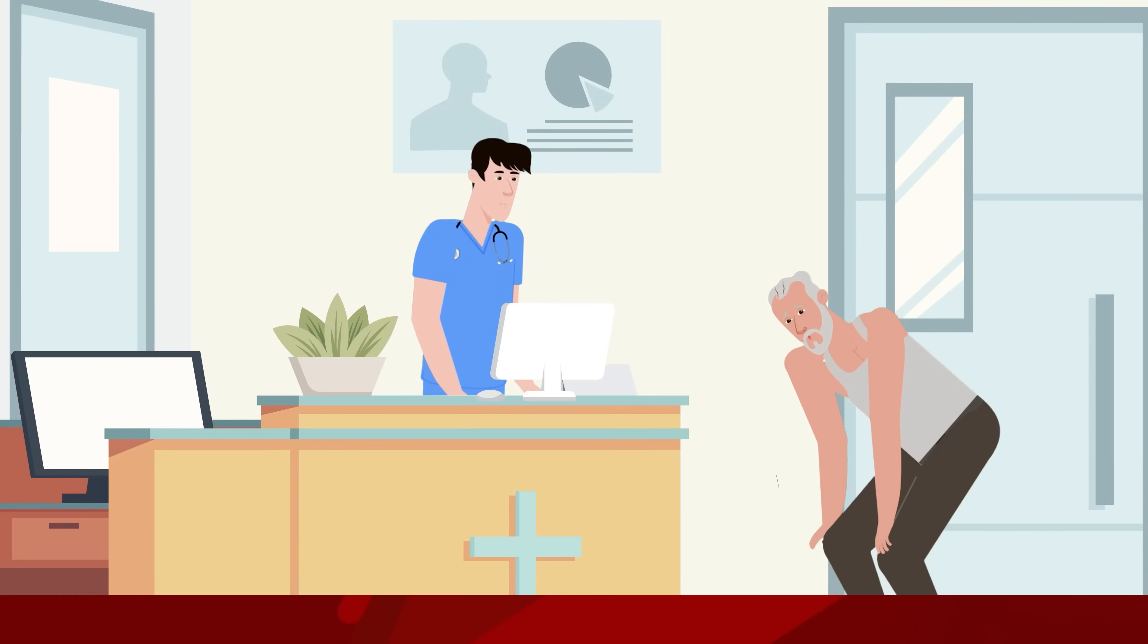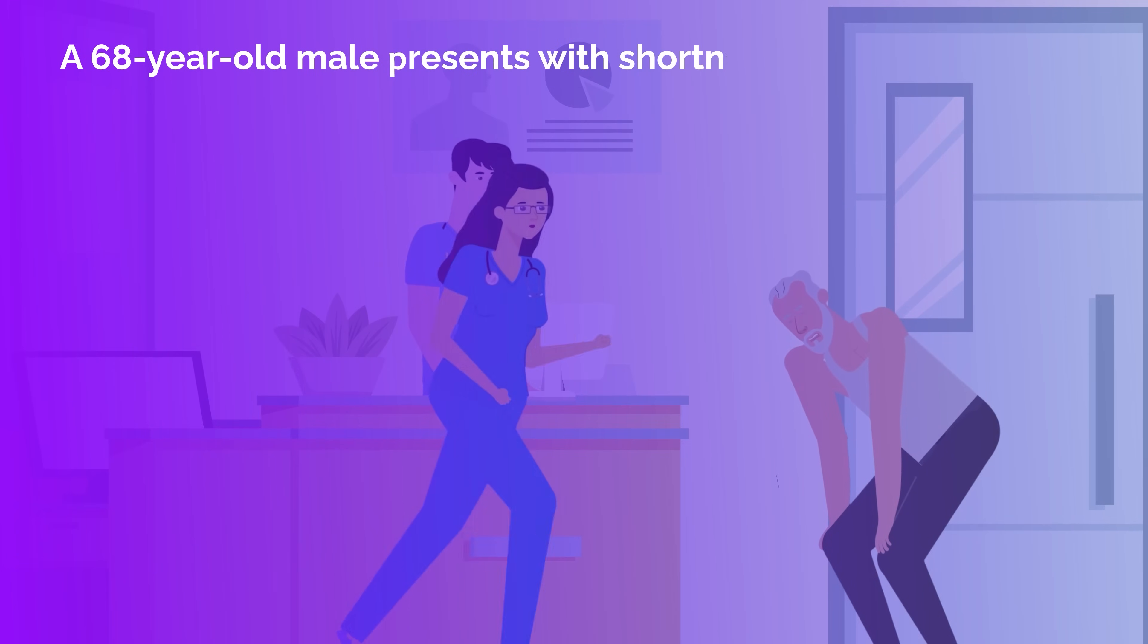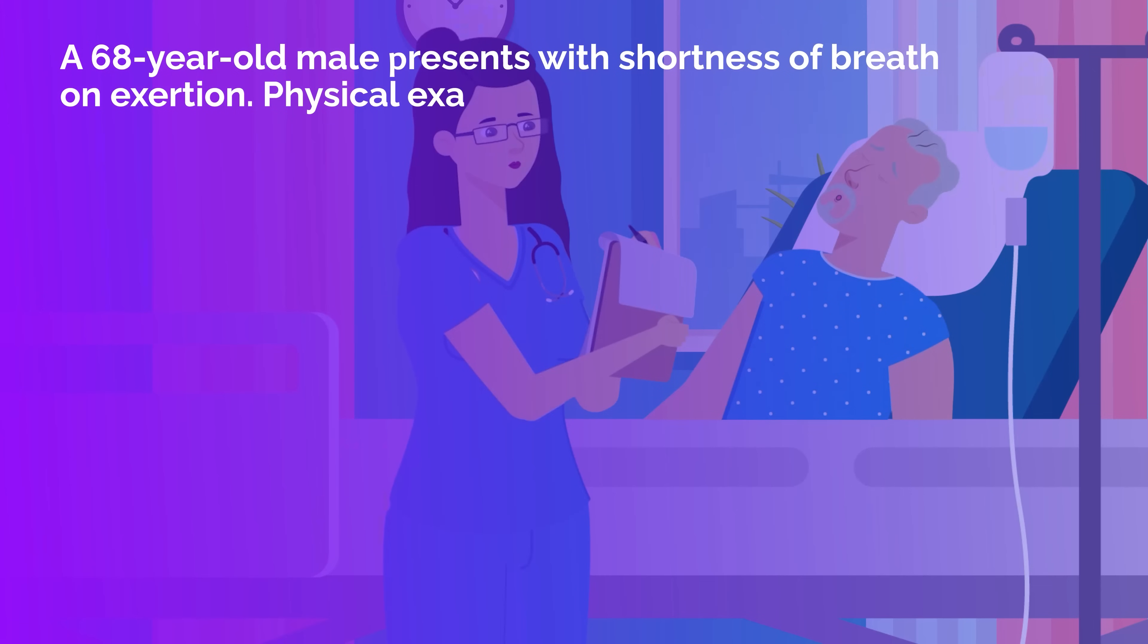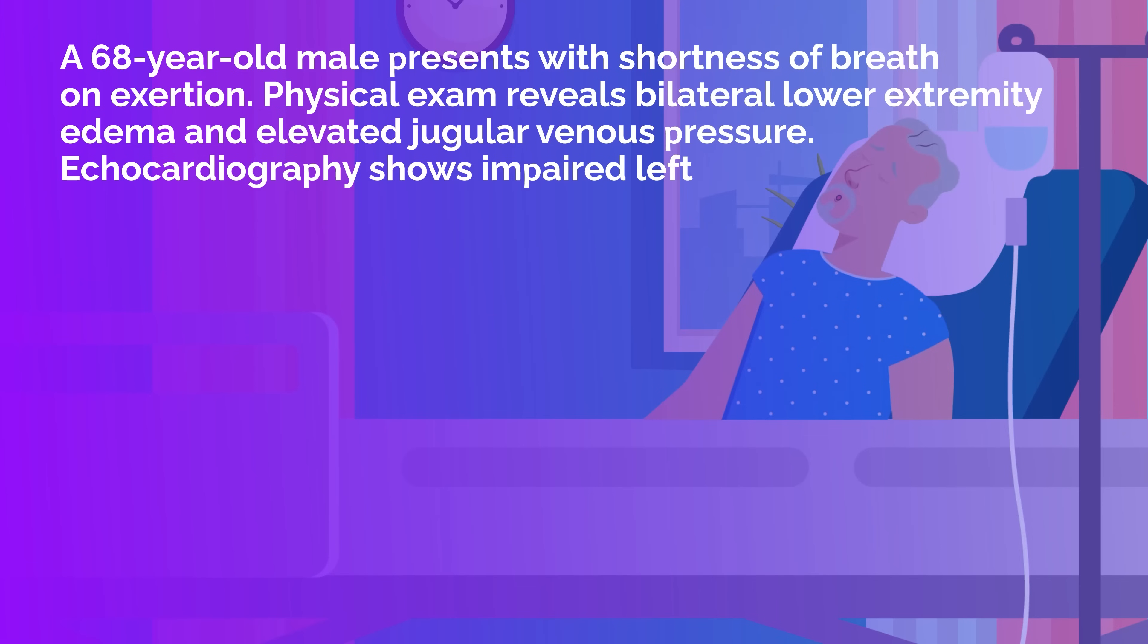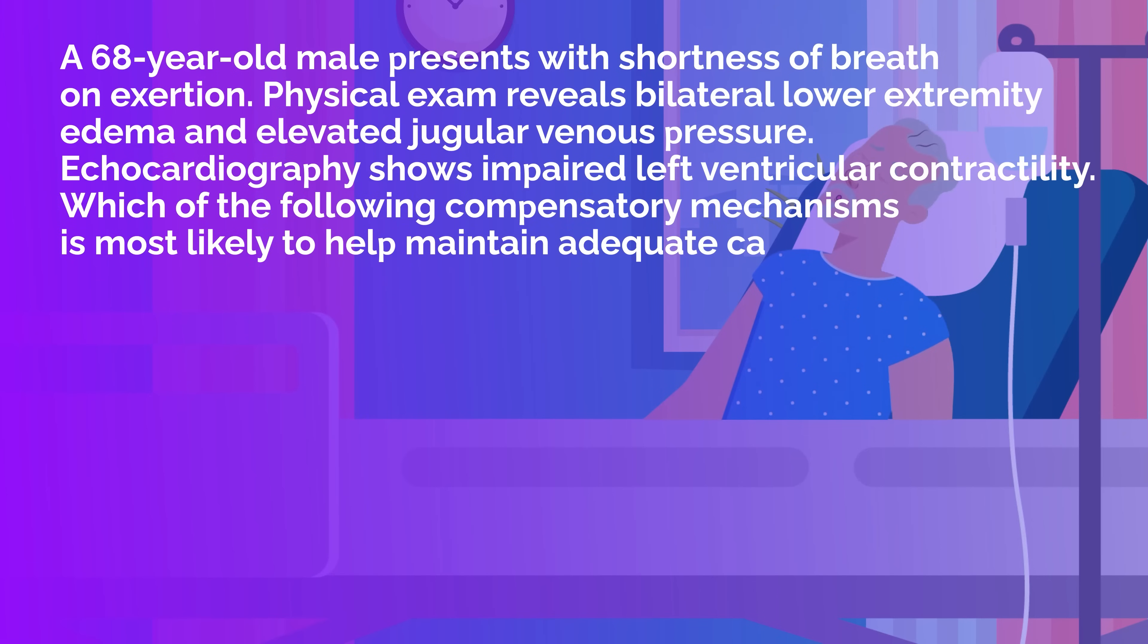A test question might look like this. A 68-year-old male presents with shortness of breath on exertion. Physical exam reveals bilateral lower extremity edema and elevated jugular venous pressure. Echocardiography shows impaired left ventricular contractility. Which of the following compensatory mechanisms is most likely to help maintain adequate cardiac output in this patient?